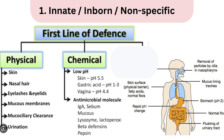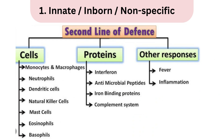The second line of defense gets activated during infection. This includes fever, which raises body temperature to slow down the growth of microbes, and inflammation, which brings immune cells to the infected site. The cells involved in innate immunity include neutrophils, macrophages, natural killer cells, and dendritic cells. Together these form our innate immune system, giving immediate but non-specific protection.